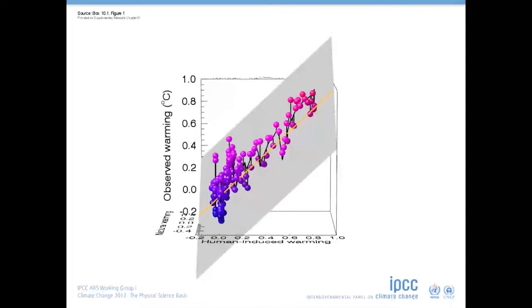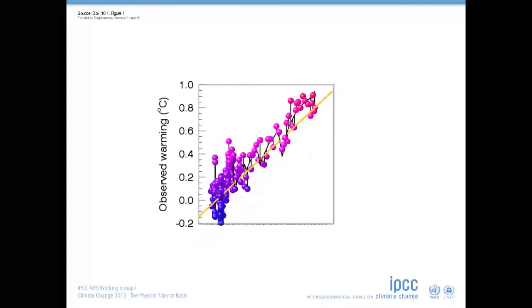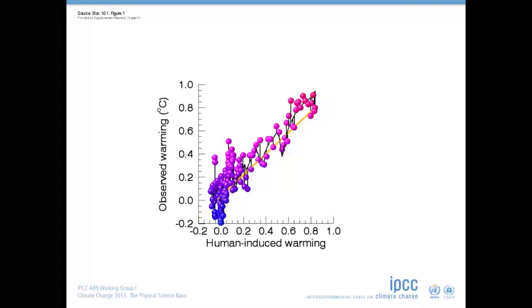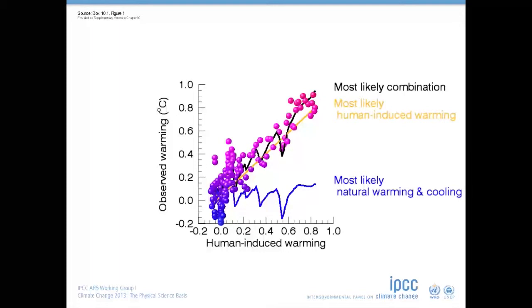Now we can go back to plotting in two dimensions to see what this implies. After allowing for the fact that the models may be over or underestimating the response to human or natural factors, we find an even better fit to observed temperatures, and the discrepancy with the past few years has been resolved.